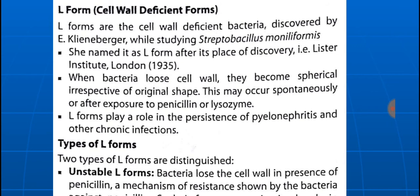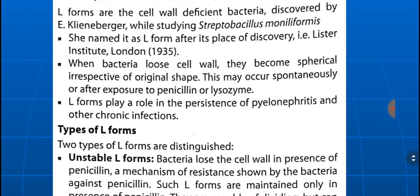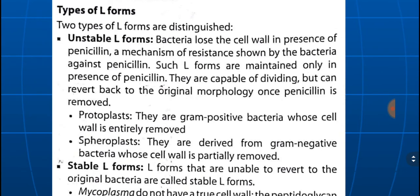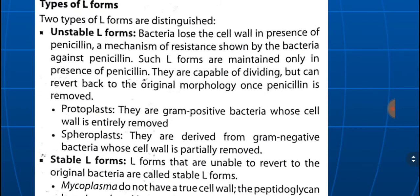Streptobacillus moniliformis leads to Haverhill fever. There are two types of L forms: unstable L forms and stable L forms.